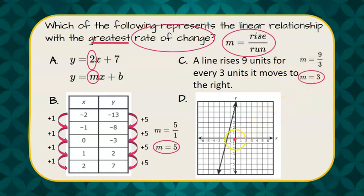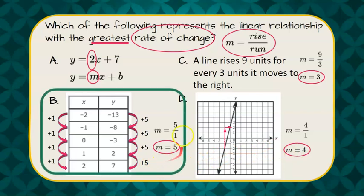And in choice D we're going to use rise over run on our graph. So we see that we rise 4 and run 1 and this simplifies to a slope of 4. Therefore we can conclude that the greatest rate of change is choice B with a slope of 5.